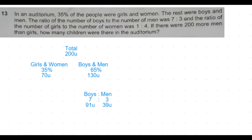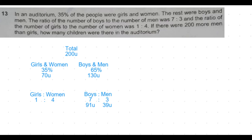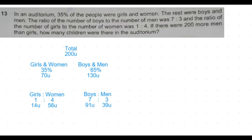Similarly, the girls and women are 35 percent of the 200 units, which is 70 units. And within that 70 units, the girls to women ratio is given as 1:4, which means total five parts is equal to 70 units. So one part is equal to 14 units, that's the number of girls, and women are the remaining 56 units.